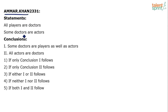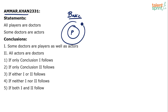All players are doctors. Some doctors are actors. So, simple statements to keep in mind. Let's draw the basic diagram for this. All the players are doctors, so all the players come inside doctors, and some of the doctors are actors. This is the overlapping between doctors and actors.